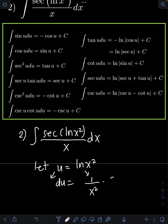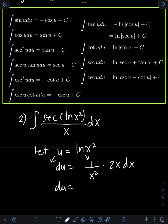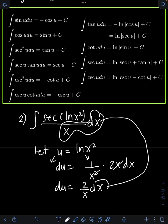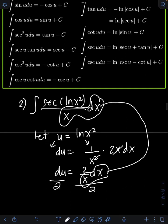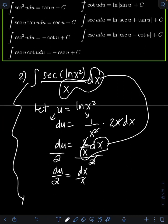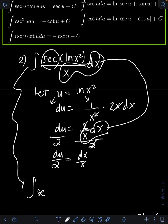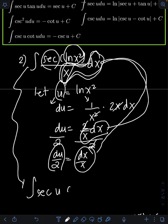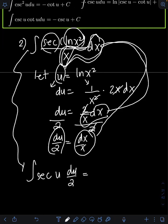The derivative of x² is 2x dx, so simplifying we get du = 2/x dx. We can see we have created the term dx/x in the original integral. Dividing both sides by 2 gives du/2 = dx/x. Substituting, sec(ln(x²)) becomes sec(u), and dx/x becomes du/2. The constant 1/2 goes in front, giving us (1/2) ∫ sec(u) du.